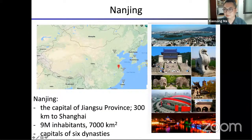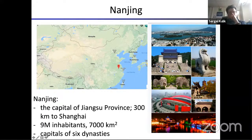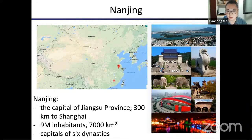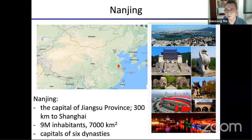This is a map of China. This is metropolitan Shanghai, and Nanjing is somewhere here — about 300 kilometers away from Shanghai. It's the capital of Jiangsu Province. In all, we have about 9 million inhabitants. By Chinese standards it's not a supersized city, but it's already quite big, with an area of about 7,000 square kilometers. Nanjing is not only an important city in modern China but also in ancient China, having been the capital for six dynasties.